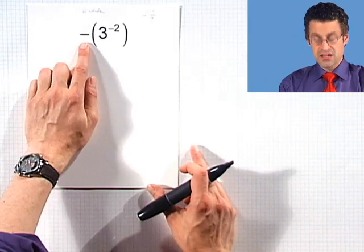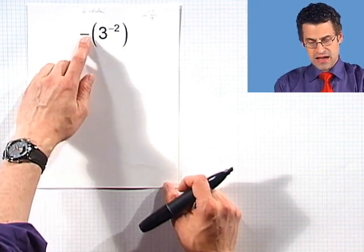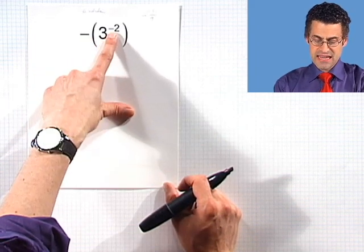If we take a look at this, we're now going to use the properties of exponents that we know. That negative sign way out in front, that's going to stick there. And here I see 3 to the negative 2 power.